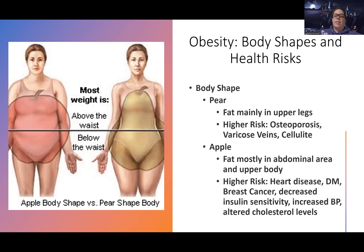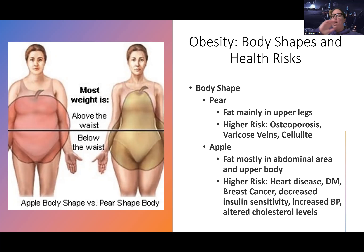As a pear shape, I'm much more at risk for things like arthritis, osteoporosis, varicose veins, and increased pressure in the blood vessels of the legs, as well as cellulite — all because of where the fat accumulates. Whereas the apple shape, where fat is mostly in the abdominal area and upper body, leads to higher risk for heart disease, diabetes, cancer, insulin issues, cardiovascular disease, high blood pressure, and cholesterol problems.